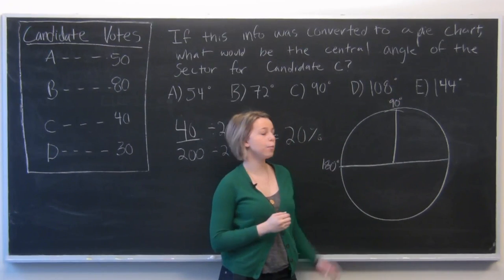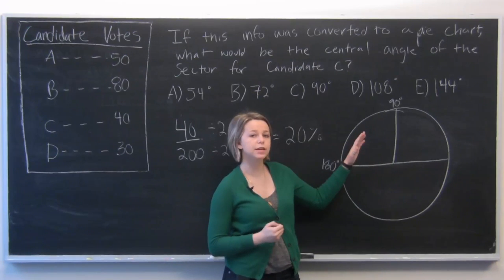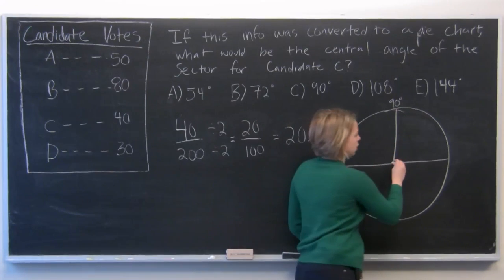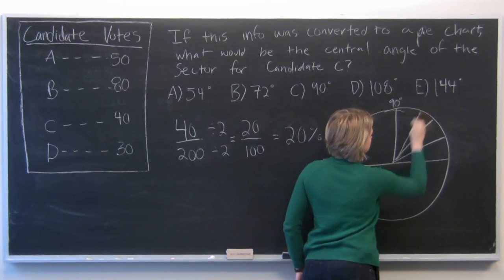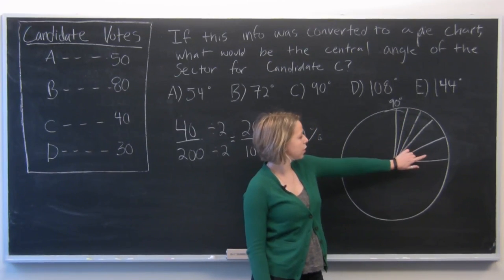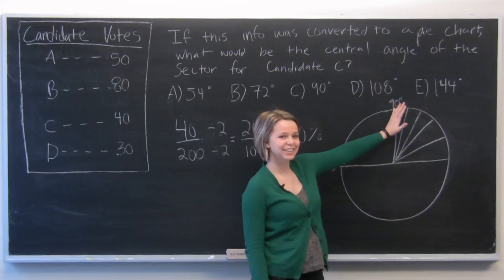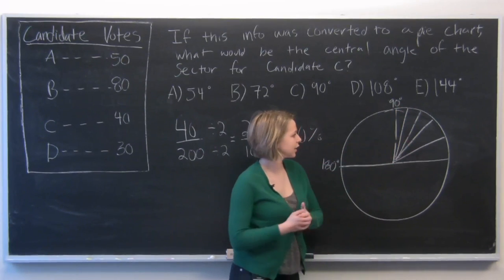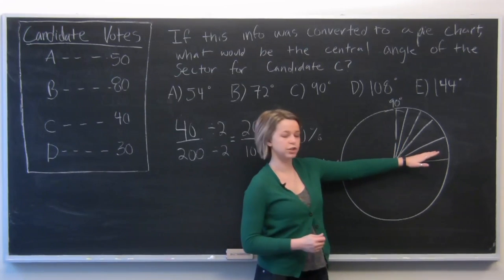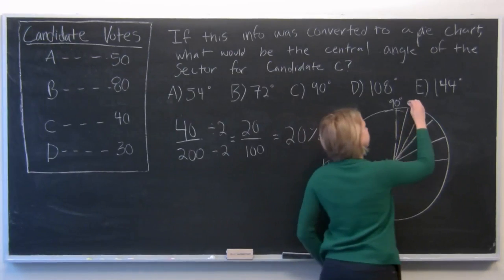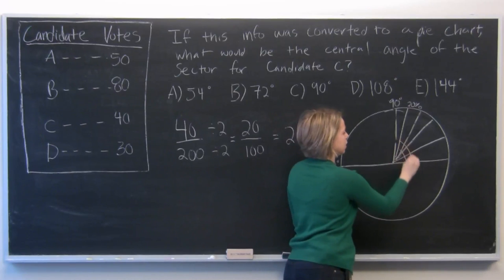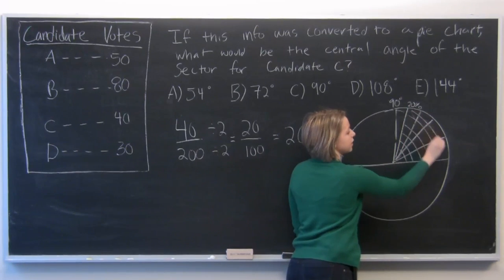So in order to calculate how big the percentage is for 20% of the vote, we need to divide this quarter of the circle into five sectors. And each of these sectors represents 5% of the vote, which adds up to 25% of the circle at 90 degrees. So 20% of the vote, if each of these sectors represents 5%, would lie here. So candidate C's votes represent this much of the pie chart.